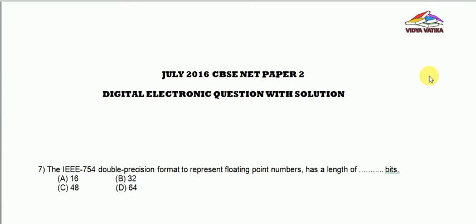This is CBSE NET, July 2016, Paper No. 2, Question No. 7. Question states that the IEEE 754 double precision format to represent floating point numbers has a length of dash bits.